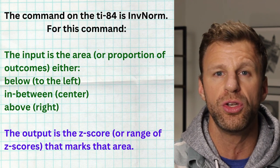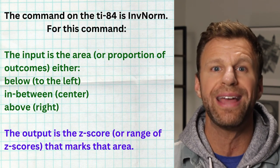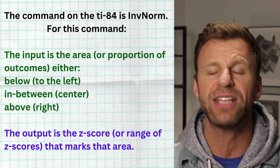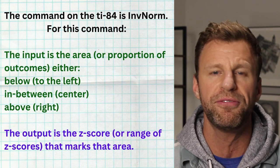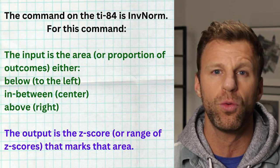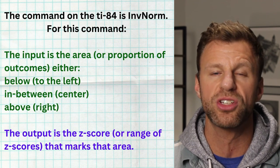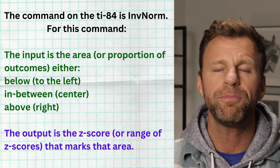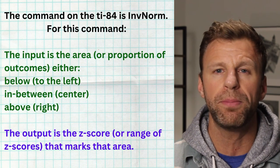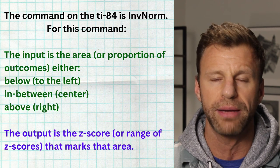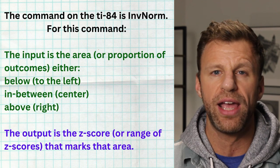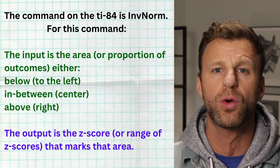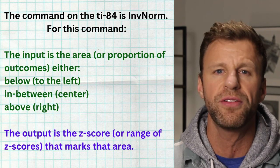What is the output when you use invNorm? The output is the Z-score that marks that area. So if you type in 0.05 with left, it gives you the Z-score that marks the bottom 5%. If you type in 0.05 with right, it gives you the Z-score that marks the top 5%. Because of symmetry in the normal model, the Z-score marking the top and bottom 5% are the same value — just negative on the left and positive on the right. If you type in 0.05 as the area and select center, you'll get two Z-scores representing the lower and upper boundaries of the middle 5%.